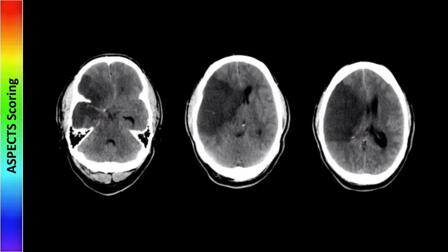Here is an actual case. You can see the dense middle cerebral artery, which does not count in this scoring system. We have cortical hypodensity in M1 and M2, so we only score a single point here in the M3 region. M4 and M5 are clearly abnormal, so we score only one point for the M6 region. Lastly, the caudate nucleus, internal capsule, lentiform nucleus, and insular cortex are all abnormal. So this patient scores a 2 out of 10, obviously predicting a very poor outcome.